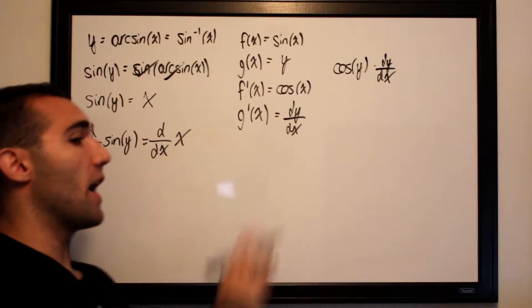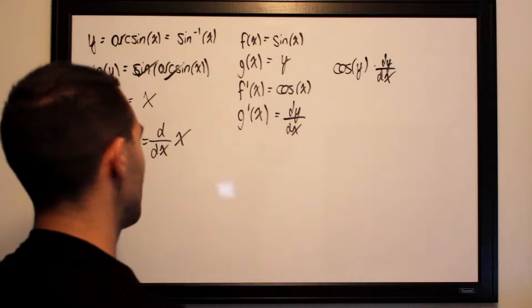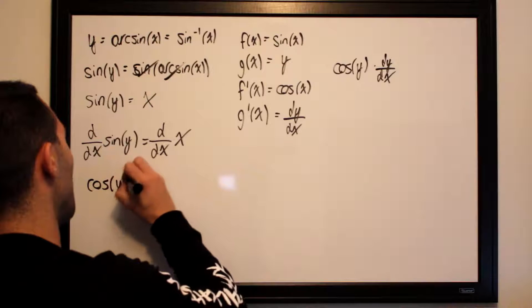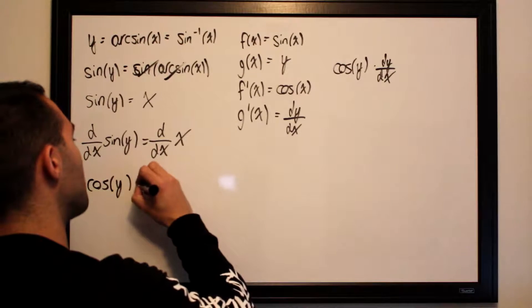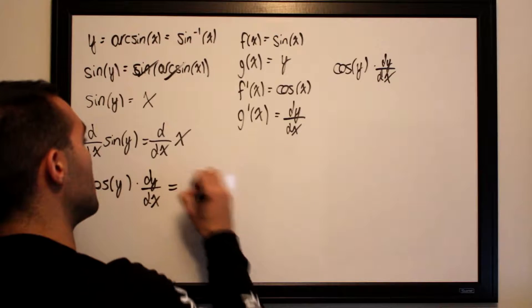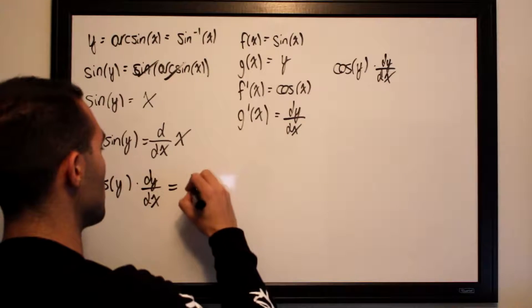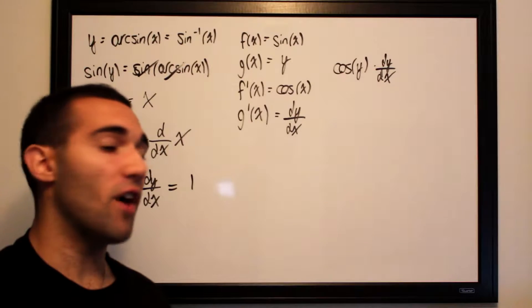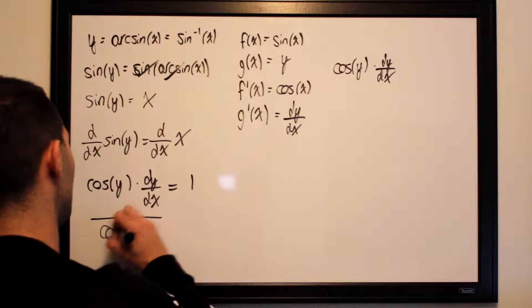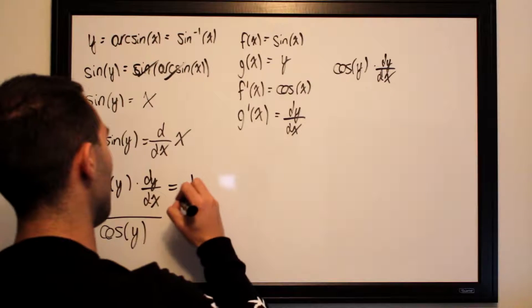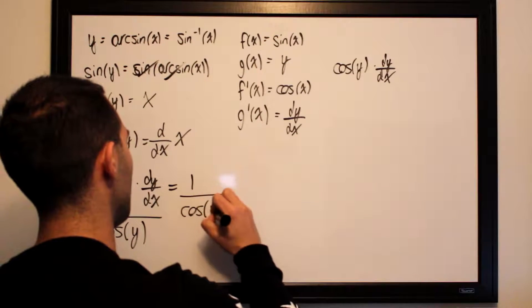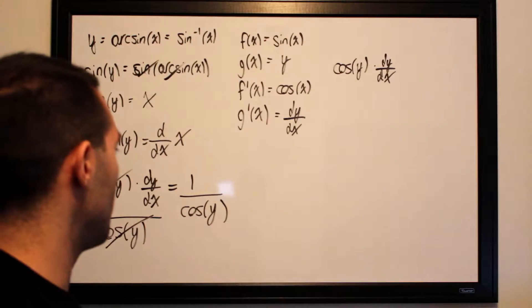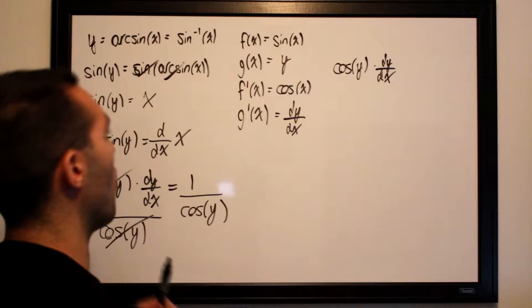And d/dx of x is just 1. So our equation is cosine of y multiplied by dy/dx is equal to 1. We want to isolate dy/dx, so we divide both sides by cosine of y. Cosine of y cancels out, and all we're left with is dy/dx is equal to 1 over cosine of y.